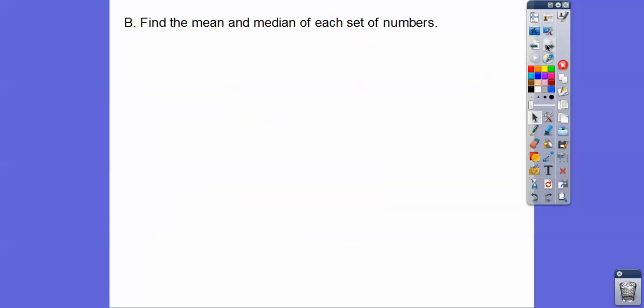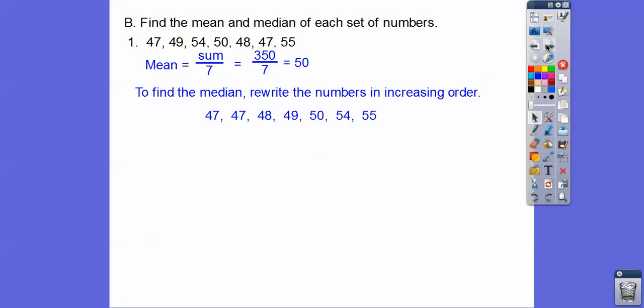So let's find the mean and median of each set of numbers here. So here's the first one. We're going to find the mean, we just add them all up and divide by seven numbers there, and we get 50 right there. Easy enough. And then to find the median, you've got to rearrange them to put them from smallest to biggest, usually that's what I do. And then the middle number right here, there's seven numbers, so it's this fourth guy right here. So you get 49 on that.